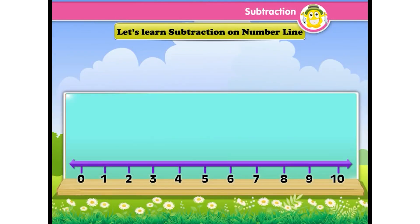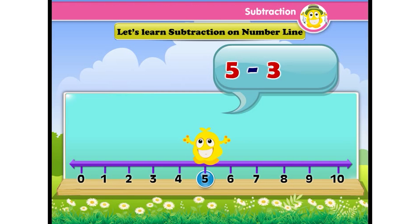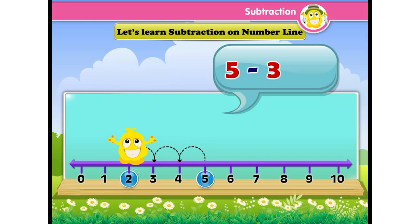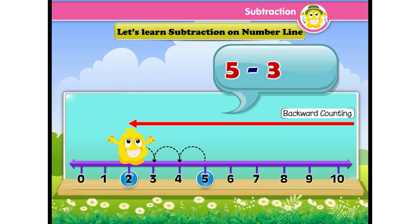Let's learn subtraction on the number line — it's like playing hop and skip. Here is a number line, which is just a line with numbers. Popcorn is standing on number five. If he has to subtract three, he will take three jumps backward: four, three, two. Backward counting helps in subtraction. So five minus three is two.